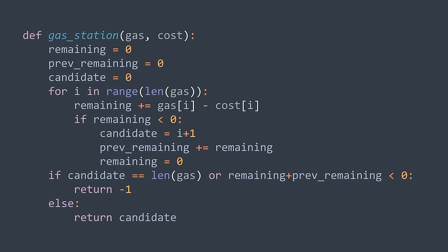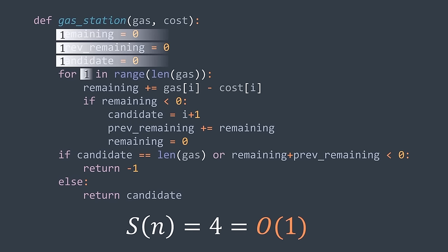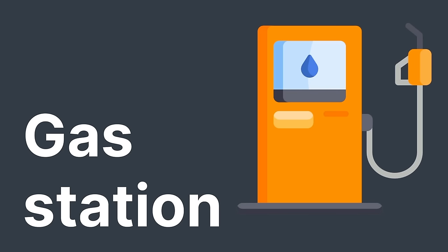We can track pre_remaining in the first loop to avoid traversing again. For time complexity, just one loop doing n iterations with all O(1) operations — O(n) time complexity, much better than O(n²). Constant space complexity. Basically, we search for the candidate (station that reaches the end without going negative), then verify it still works for the remaining part of the cycle.